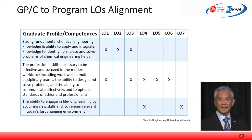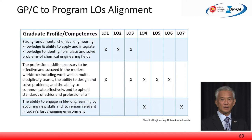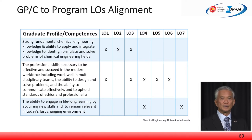This slide shows an example of alignment mapping between the graduate profile competencies and the ELOs of the programme. Various terms are used in different universities and in different countries — sometimes they are called graduate learning attributes, university requirements, graduate profile, and so on — but all need to show alignment with the learning outcomes.